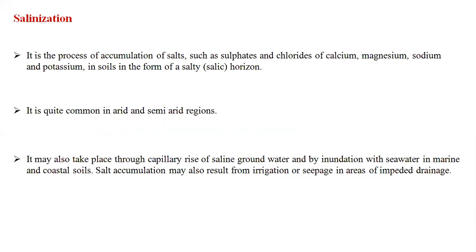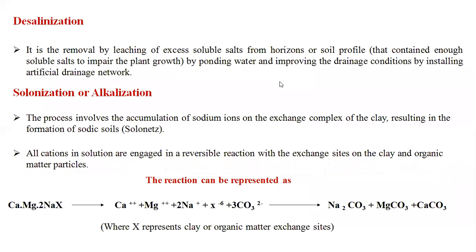Salinization is the accumulation of salts such as sulfates and chlorides of calcium, magnesium, sodium, and potassium in the soil, forming a salic horizon. This is common in arid and semi-arid regions where precipitation is very low and evapotranspiration is high. The water table rises to the surface layer and the dissolved salts accumulate there.